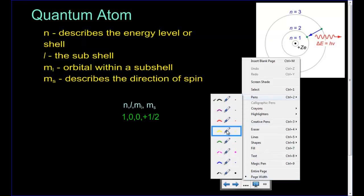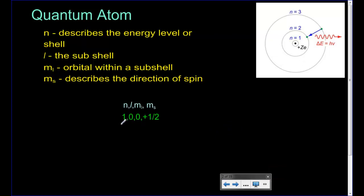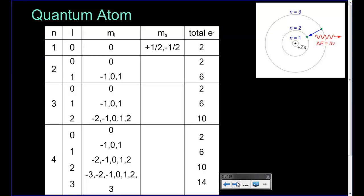So we have this first energy level, a zero subshell, a zero orbital, and spinning with a plus one-half spin. In the first energy level, there is one subshell — the zero subshell — and it has one orbital called the zero orbital. It has a possibility of a plus one-half spin and a minus one-half spin, giving us a total of two electrons that can exist there.